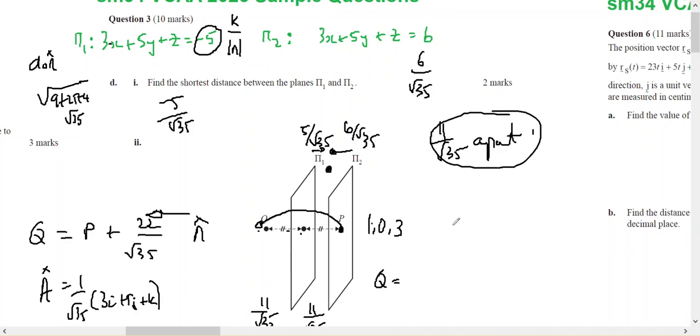So it's going to be 1 plus 3i plus 5j plus k. So it's going to be 22 on root 35 times 1 on root 35 times 3i plus 5j plus k. So it's going to be 22 on 35.